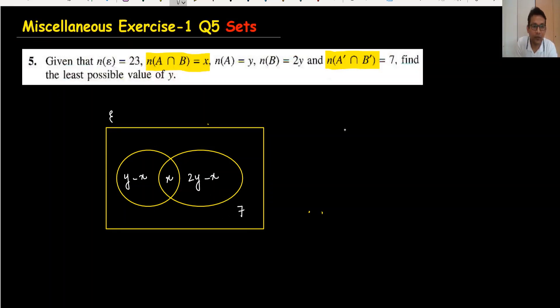The total number in the universal set is 23. For the first condition, we write: (y - x) + x + (2y - x) + 7 = 23, because the total universal set is 23.